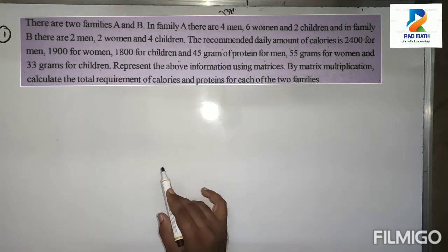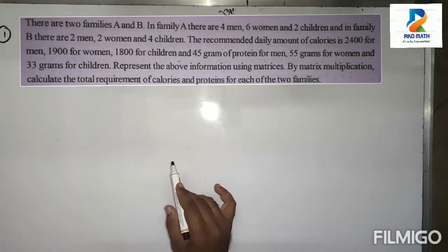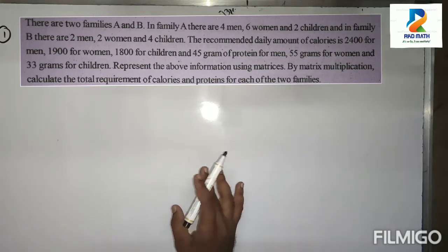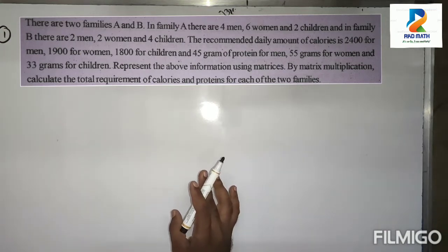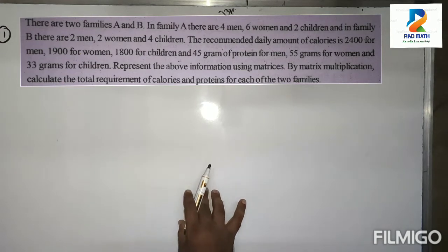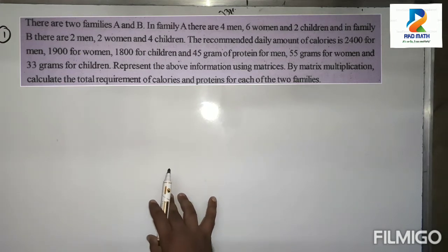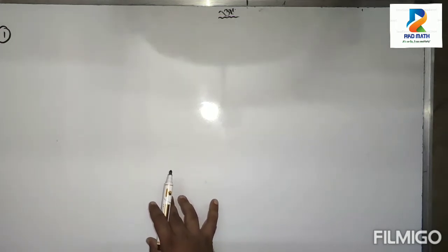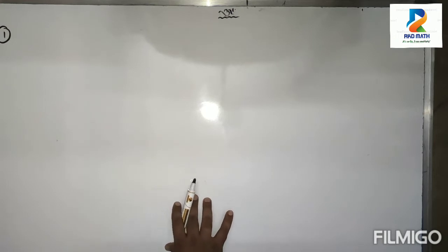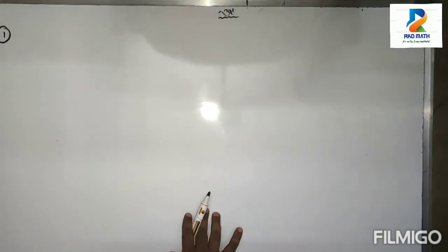Represent the above information using matrices. By matrix multiplication, calculate the total requirement of calories and proteins for each of the two families. Pause the video to write it down.